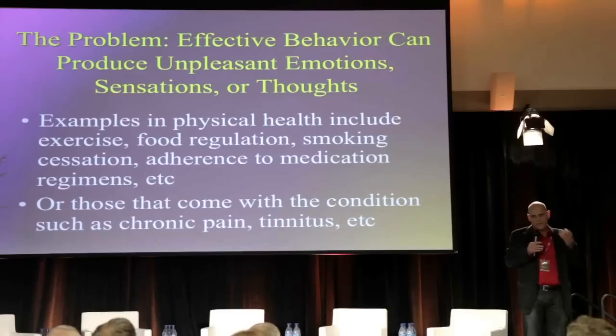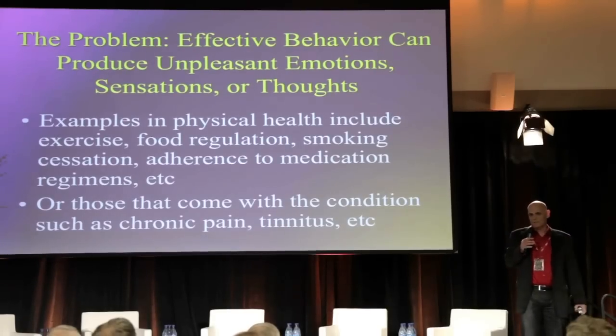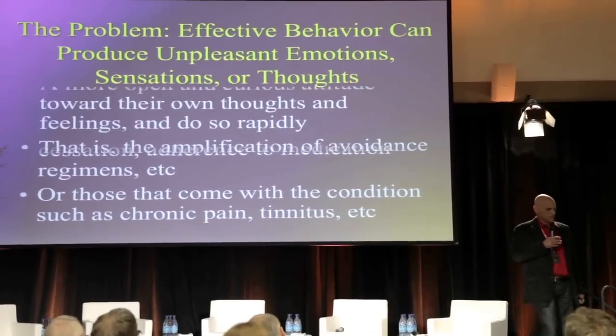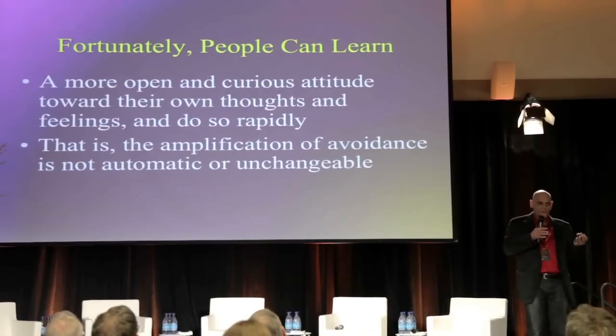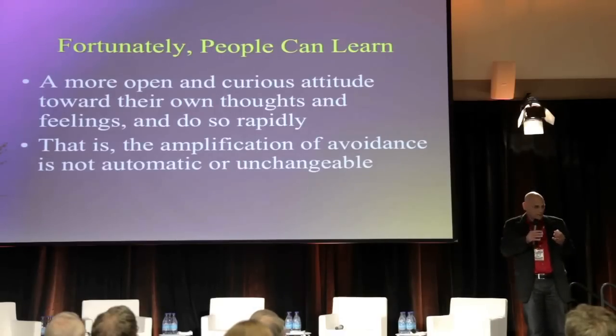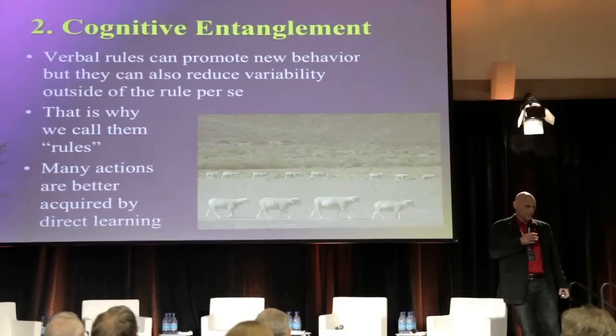There are certain kinds of things like chronic pain. Most chronic pain patients are going to be in pain the rest of their life. Can they have a life or not is the question, not can they have pain or not. If you're going to wait for the pain to go away before you have a life, you're not going to have a life. Tinnitus — 8% of the people in this room have some degree of ringing in their ears right now. It can blow up a human life waiting for the ringing to stop. There is no medical intervention that's going to remove that, but there are psychological interventions. Fortunately, people can learn to be more open and curious towards their own thoughts, feelings, memories, and bodily sensations — to be more flexible with regard to them. The amplification of avoidance is not necessary.